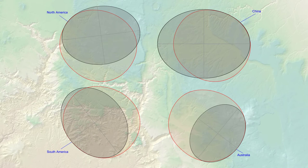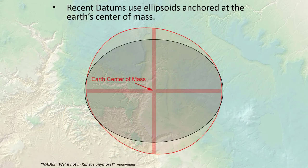We can rotate and resize the ellipsoid and anchor it to the planet's surface so it most closely matches the area we're interested in. Historically this has been done differently for different regions. For example, the North American Datum of 1927 uses the Clark 1866 ellipsoid, oriented and positioned so it is anchored to a spot in Kansas. Other datums for other parts of the world use different ellipsoids with different orientations, anchored at different parts of the world.